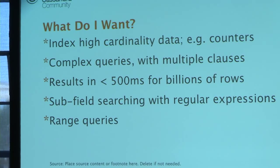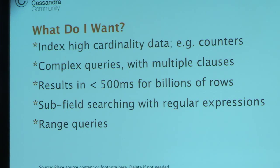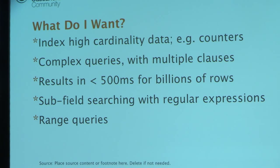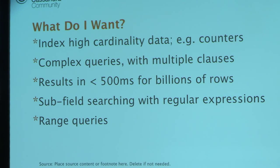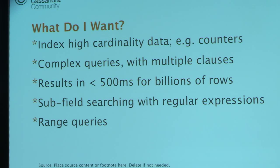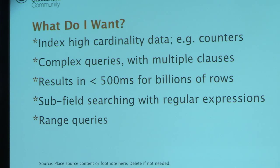What I want is high cardinality data — every single zip code in the US, or the ability to index every possible counter value for a 128-bit counter, or index every single tweet and search by regular expression. All results have to return in less than 500 milliseconds for billions of rows.